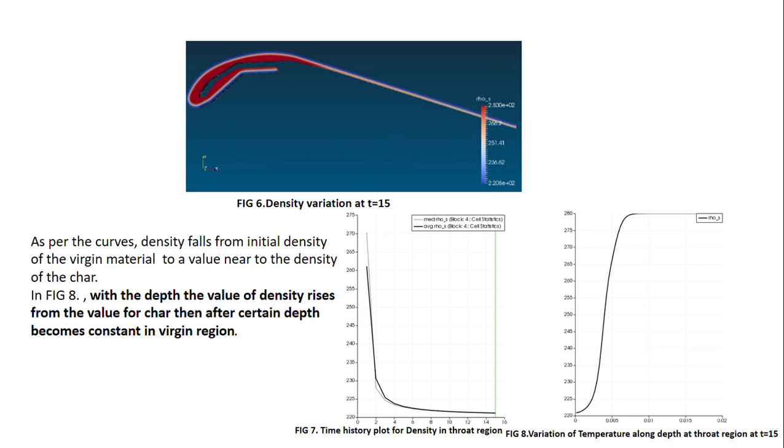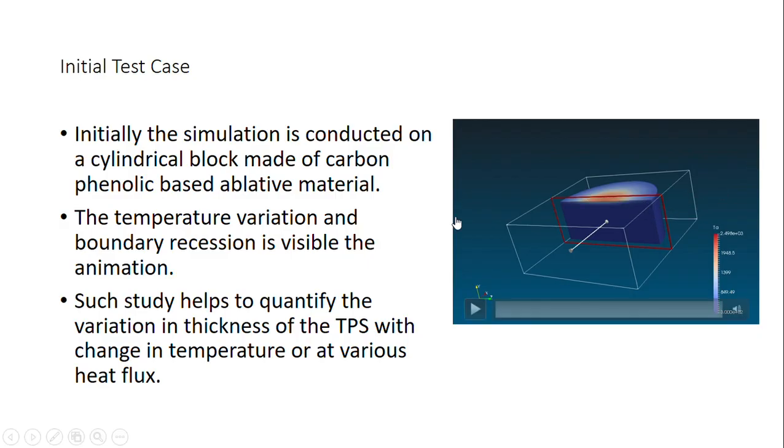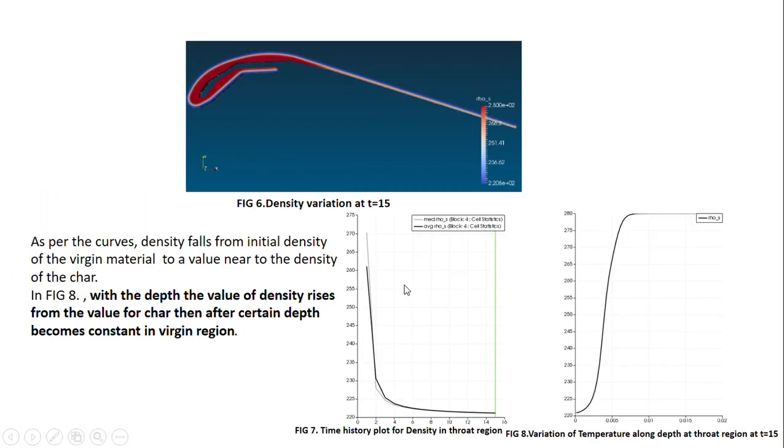I would also like to add that the boundary recession code, the dynamic mesh code used in PATO, gets quite difficult to employ with quite complex geometries. I initially showed you this cylindrical geometry which is quite easy to model, but for complex geometries like this nozzle TPS, there is very high amount of numerical diffusion that occurs, so there's quite high fluctuation in values. It gets quite difficult to model the boundary recession part in complex geometries. If that is needed, the dynamic mesh code needs to be taken care of and modified accordingly.